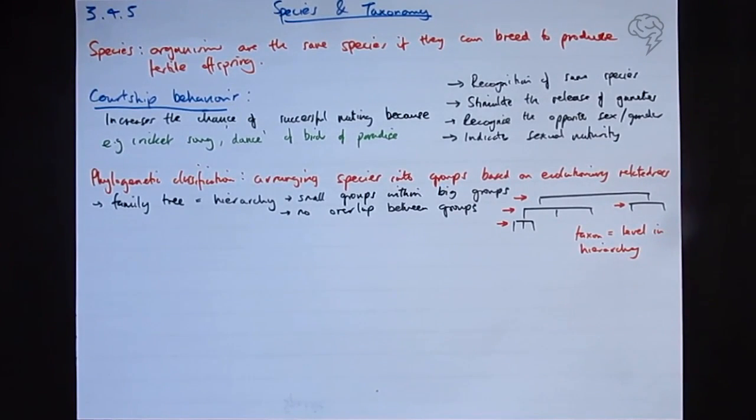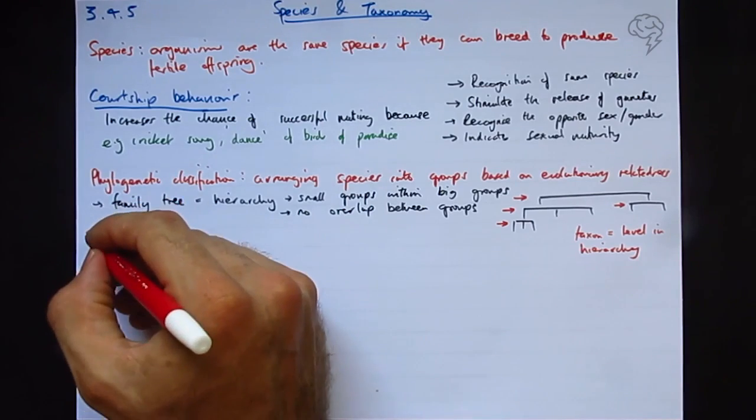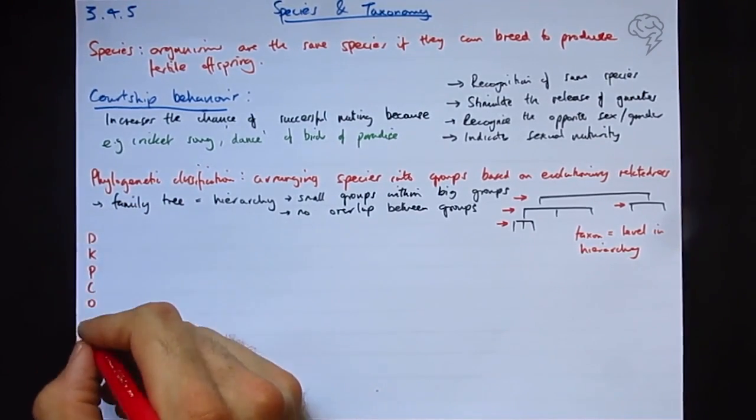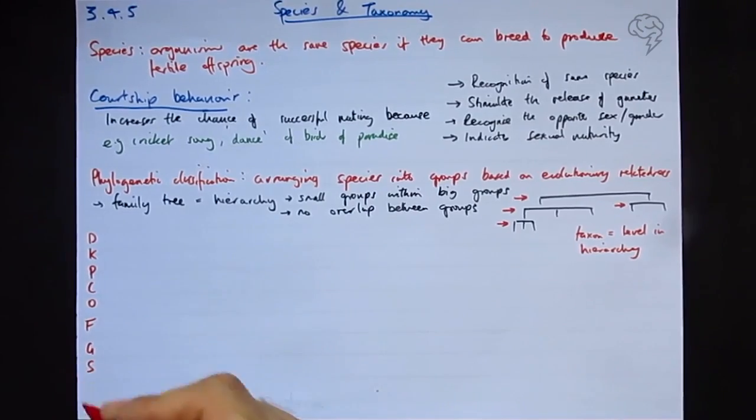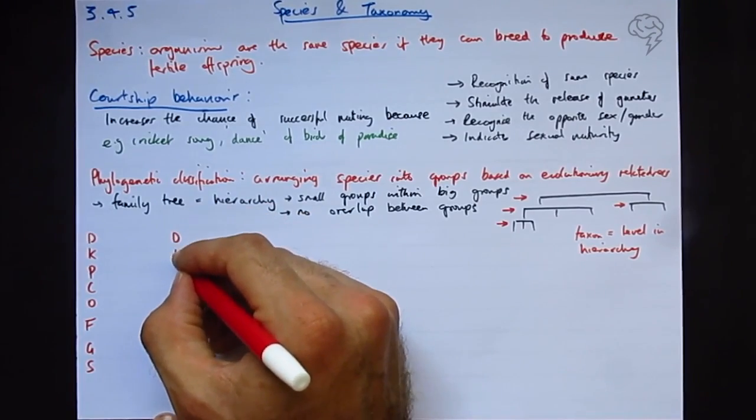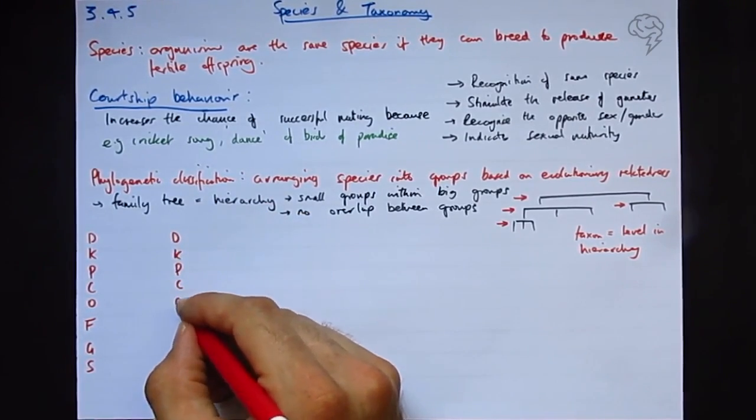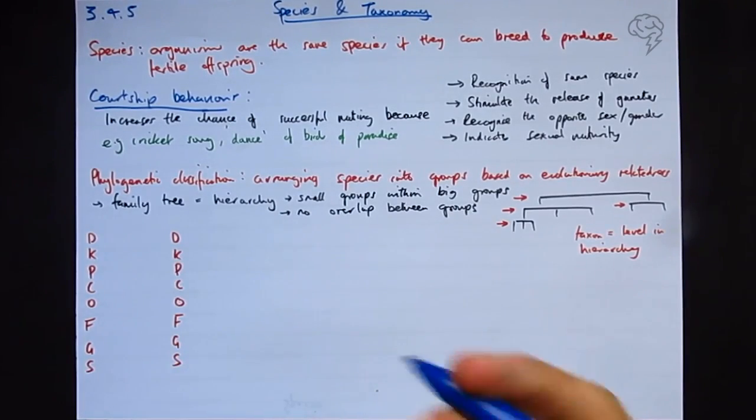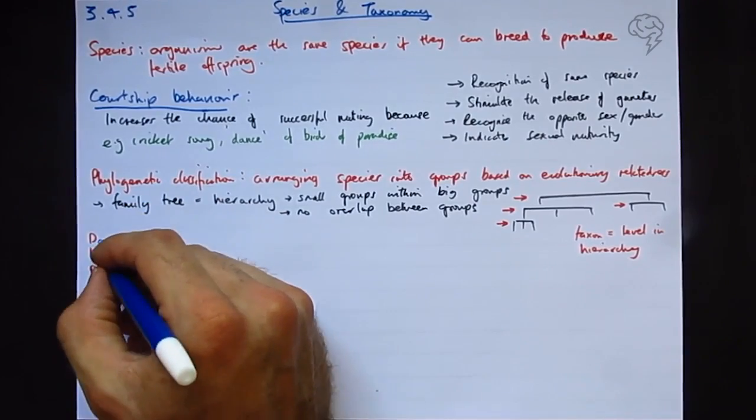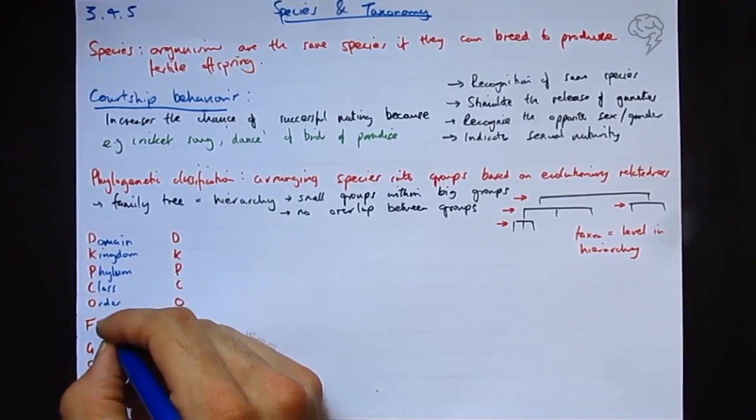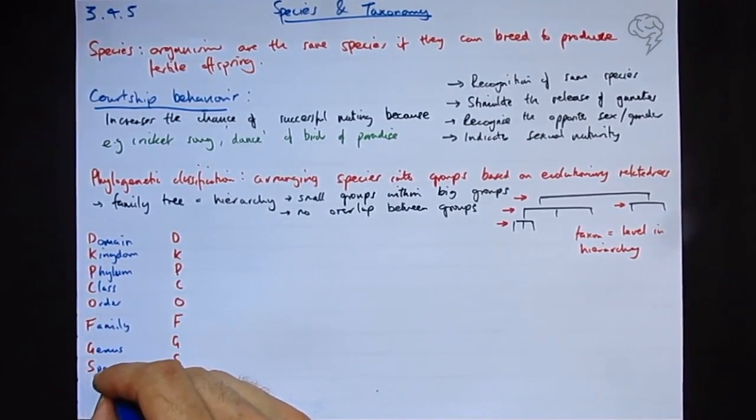So the system that we use for classifying all organisms goes a little bit something like this. We have domain, kingdom, phylum, class, order, family, genus, and species. And in fact, I'm going to give myself a bit more room and do that again, because I've got a mnemonic for this. But I recommend you always make up your own mnemonic if you can, because it will be more resonant to you. But this actually says domain, kingdom, phylum, class, order, family, genus or genus, and species.